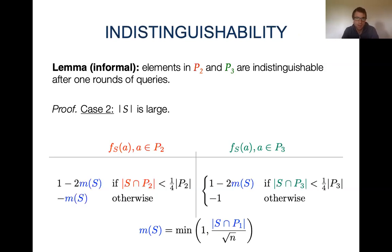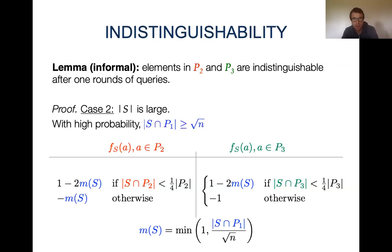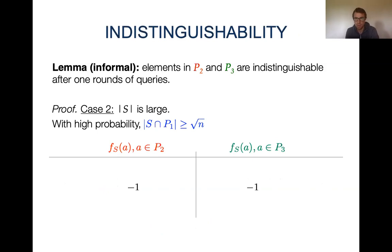In the second case, the queried set S is large. If S is large, we can apply a concentration bound: with high probability we will have a large number of elements from P1 — the masking elements — at least square root of n. If we have at least square root of n masking elements, the masking function has value 1. Plugging in the masking function with value 1, we get marginal contributions of negative 1 in all cases, so the marginal contributions of elements in P2 and P3 are again equal.